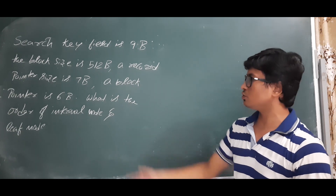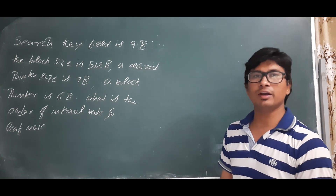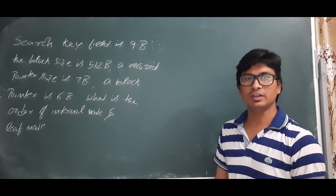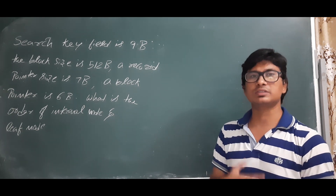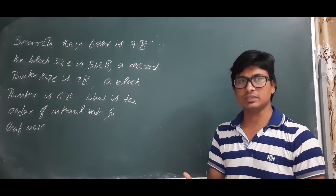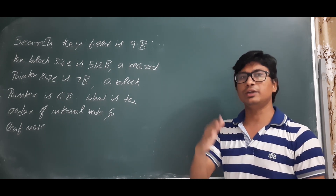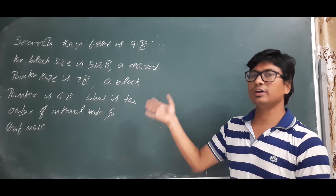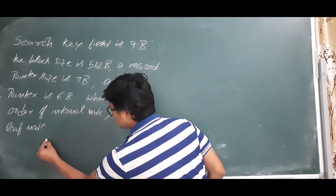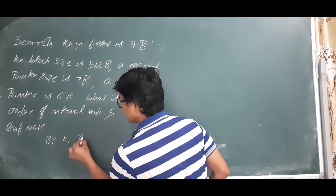In a B+ tree we have two orders: one for the internal node and one for the leaf node. We will first solve the order of the internal node. To do that, we need to know the structure of an internal node, which I discussed in the previous video. If you haven't watched that video, please go through it first for better understanding. Now let me draw the structure of an internal node.